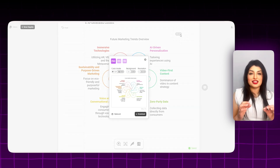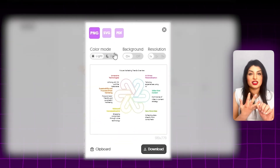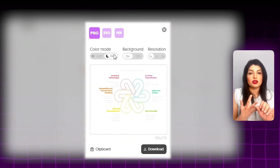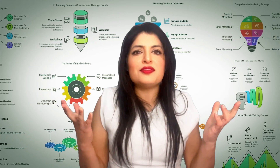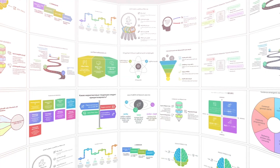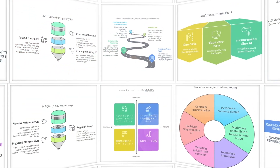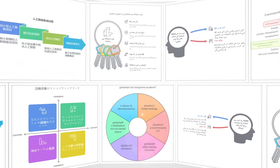Step number four: download these as SVG, PNG, or even PDF. All you have to do is export. You can do this in any language — French, Italian, Spanish, Urdu, English, Arabic. Take your pick.